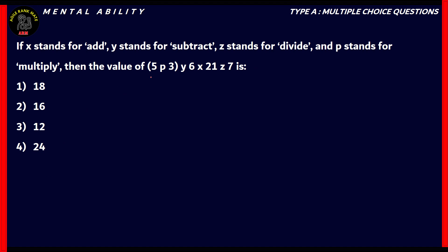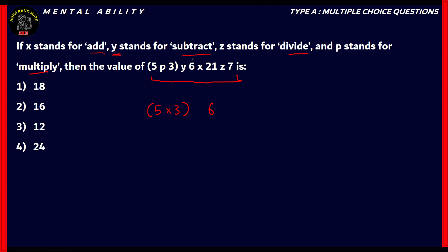The idea is to rewrite this expression in terms of actual arithmetic operators. Within the brackets it's 5P3, and P stands for multiplication, so it'll be 5 × 3. We close the bracket. Y stands for Subtract, so Y6 means minus 6. X stands for Addition, so that's plus 21. Z stands for Divide, so that's divided by 7.